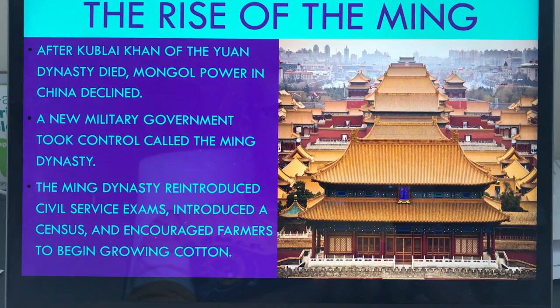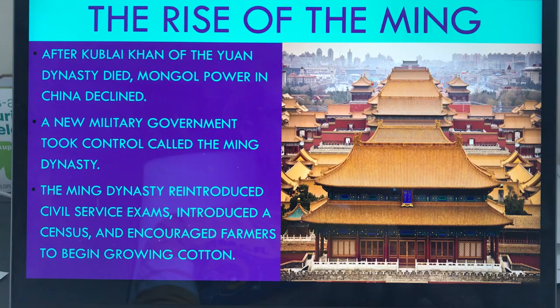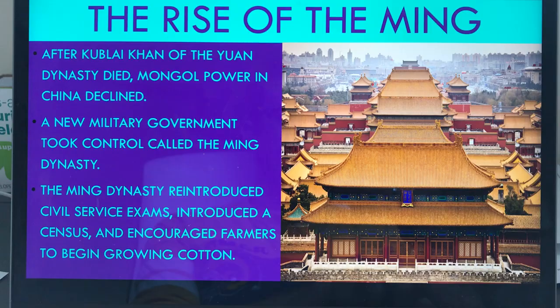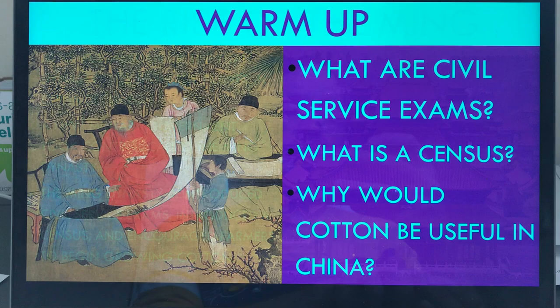The Ming Dynasty did a lot of great things for China. They reintroduced the civil service exams — those tests they had to take in order to become a government official. They created a census so they could actually count the amount of people in the country. And possibly most importantly, they made the switch from silk to cotton, encouraging their farmers to begin growing cotton.